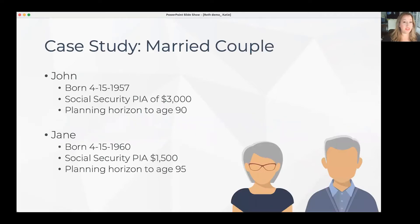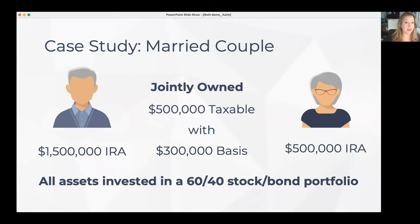We're going to start with a typical case. I've named this married couple John and Jane, and you can see their basic information here. Here we've got their investment information: John has 1.5 million in his IRA, Jane has half a million in hers, and jointly they have a half-million dollar taxable account with a current basis of 300,000. For this case, all of their assets are invested in a 60-40 stock-bond portfolio.